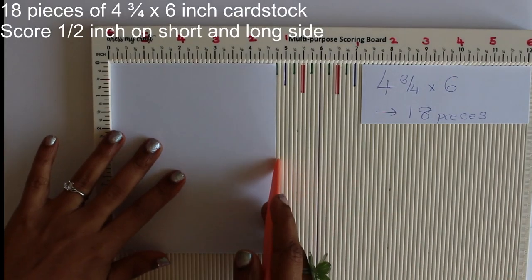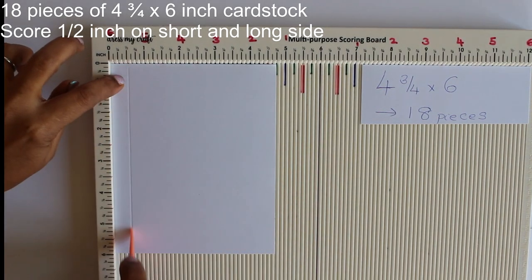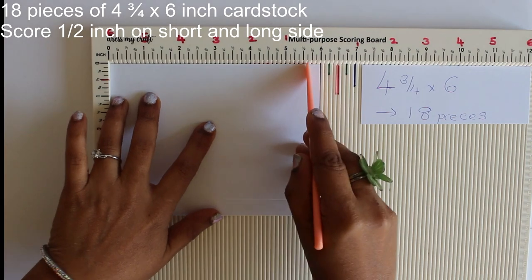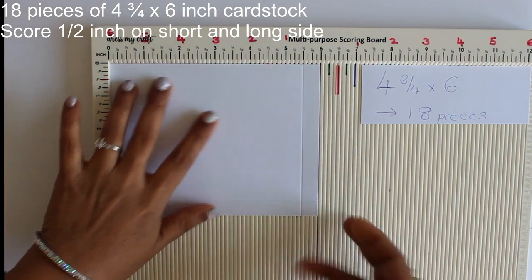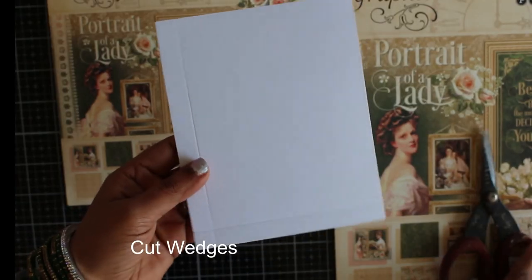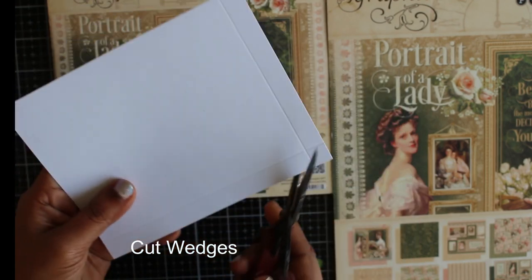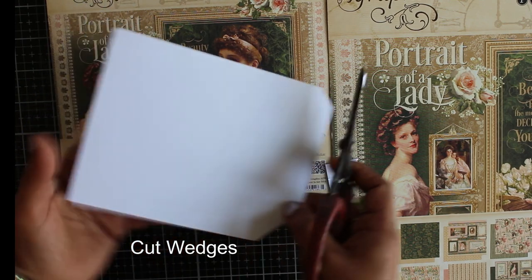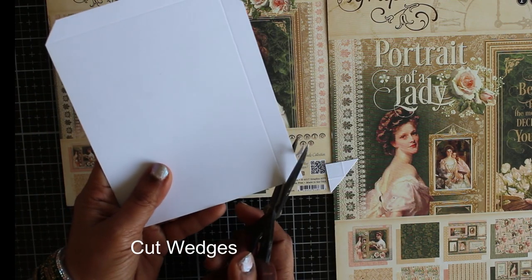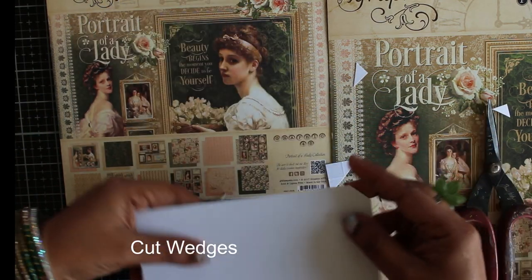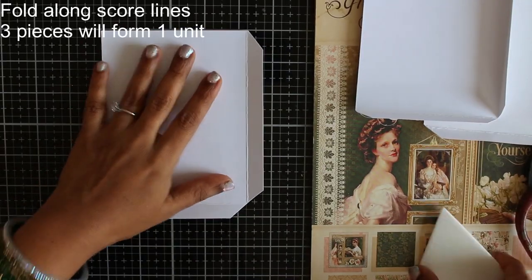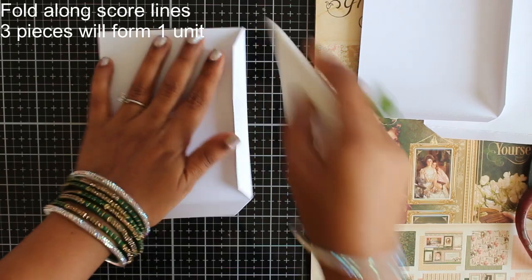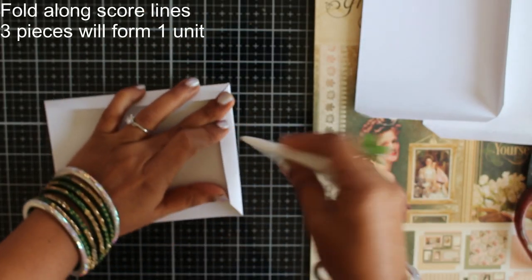Part of the tutorial I will tell you how to make the triangular units of the hexagonal box. You need 18 pieces of 4 and 3/4 by 6 inch cardstock. Fairly thick cardstock is good. After scoring half inch on either side cut wedges to help you to glue the pieces in place. Once scored fold along the score lines and you will need 3 pieces to form a triangular unit.